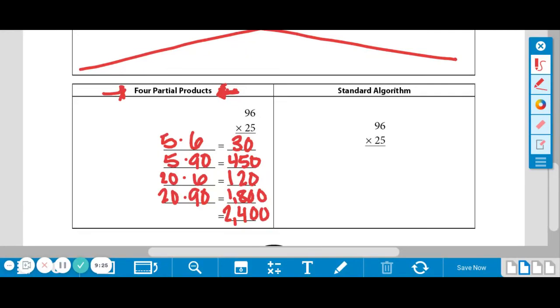Then we're going to move on to our last strategy, which was standard algorithm. So your last subtitle is standard algorithm. We're just going to work through this like we normally do. Okay. So we're going to start down here at the bottom right and work up and then over. So five times six is 30. We write a zero, carry the three. Five times nine is 45 plus three more is 48.